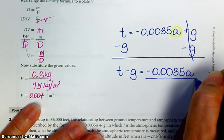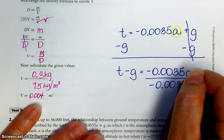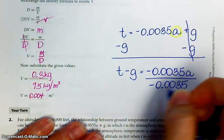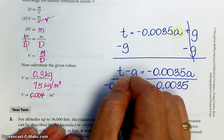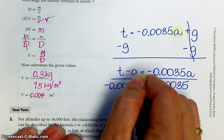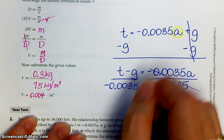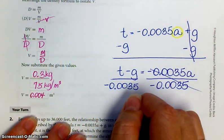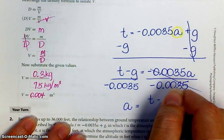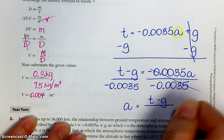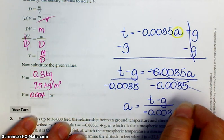So now if I want A, I'm going to divide this side by negative 0.0035. And if I divide that side by that, I have to divide this other side by the same thing, because that's the rule. So it gets rid of it there. I'm going to clean it up a little bit. But I like my variable on the left-hand side. So A is equal to T minus G divided by negative 0.0035.